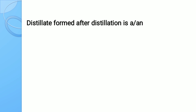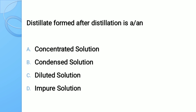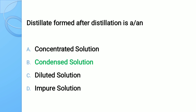Question number five: Distillate formed after distillation is a — options: A) concentrated solution, B) condensed solution, C) diluted solution, D) impure solution. The correct answer is condensed solution.